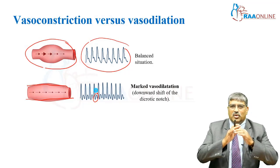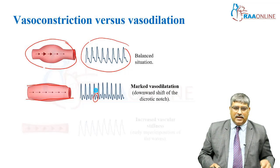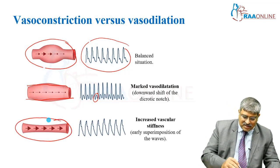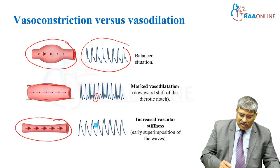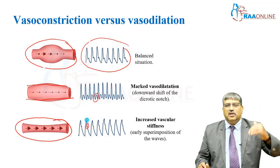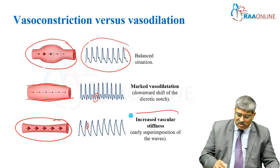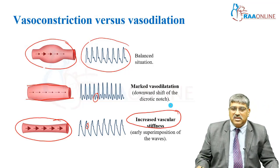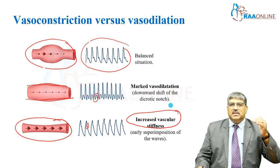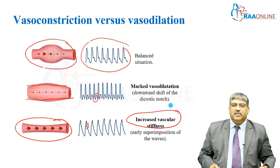That means your vessel is markedly dilated. And here you can see the vessel is constricted — what happens is your dicrotic notch is shifted upwards. This shows there is increased vascular stiffness, and this is a peripherally constricted waveform.